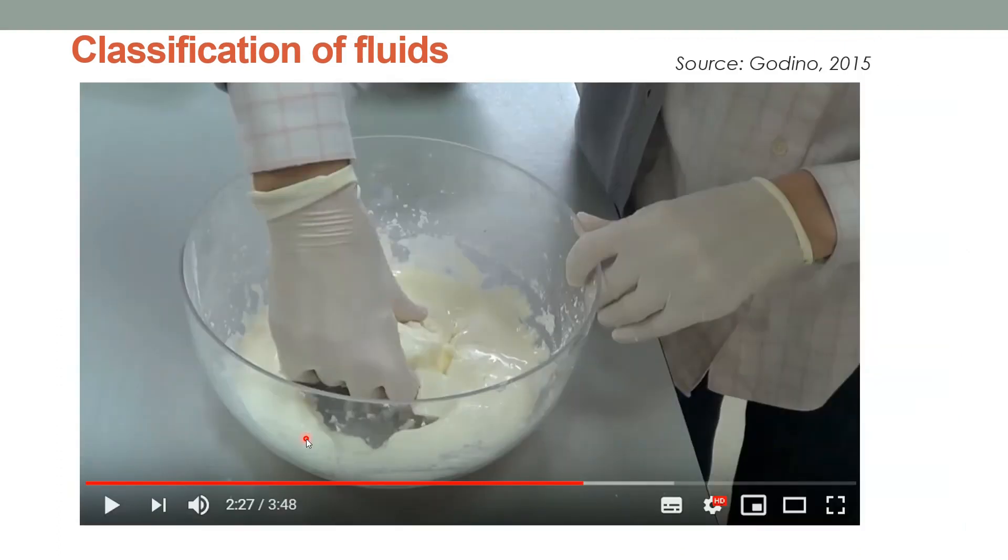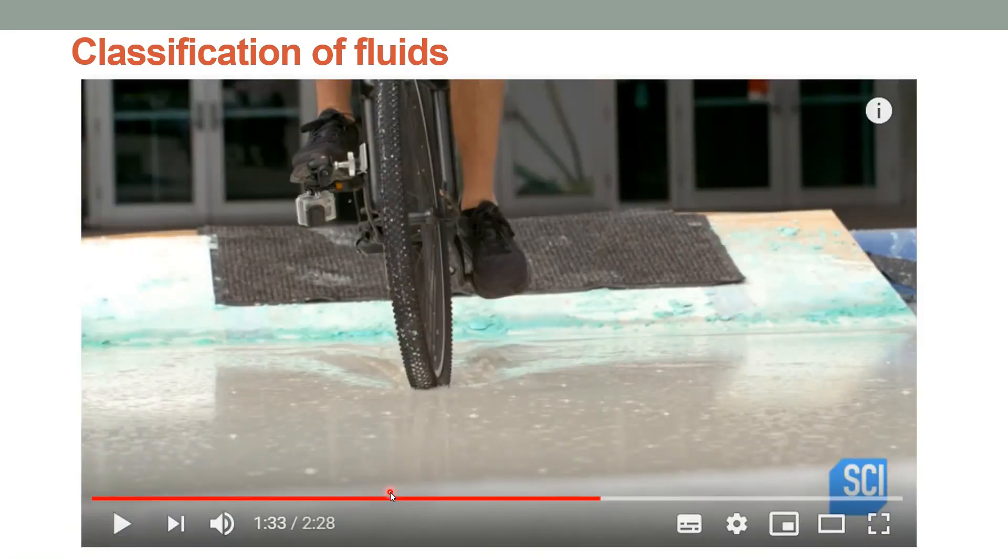A case of dilatant fluid is the mixture of water and corn flour that offers a very high viscosity when it is submitted to a high strain rate, behaving like a solid, whereas at low strain rate, it behaves as a liquid. So, if a bike goes very fast on it, it wouldn't sink, but if it goes very slowly, it sinks.